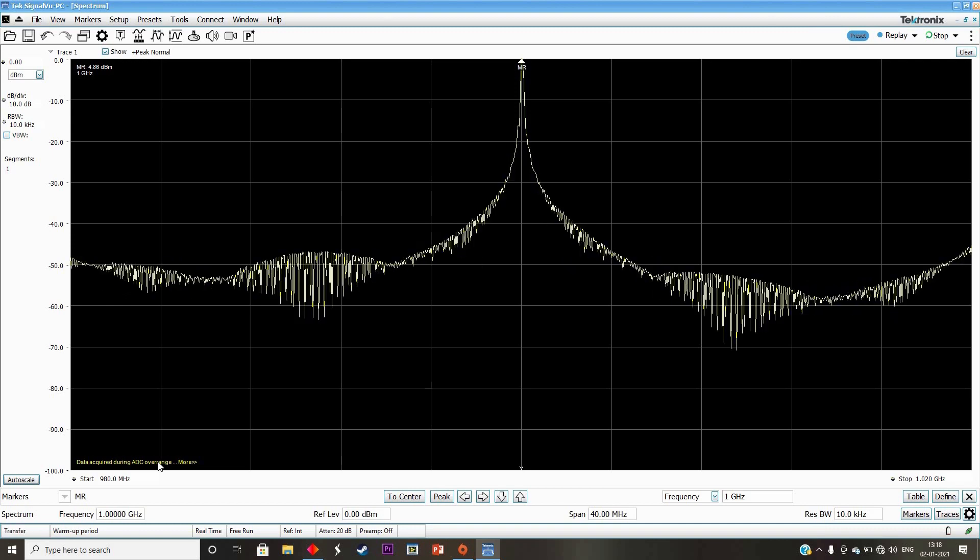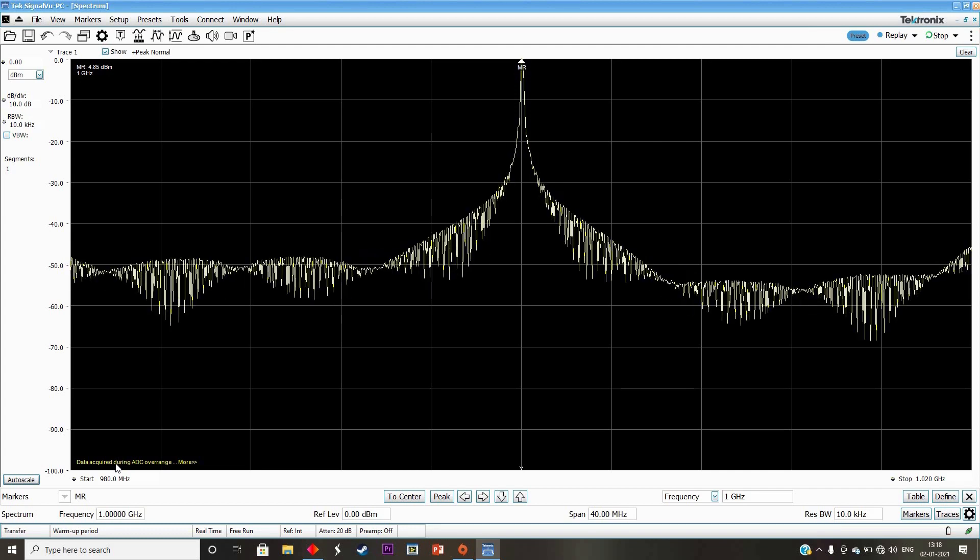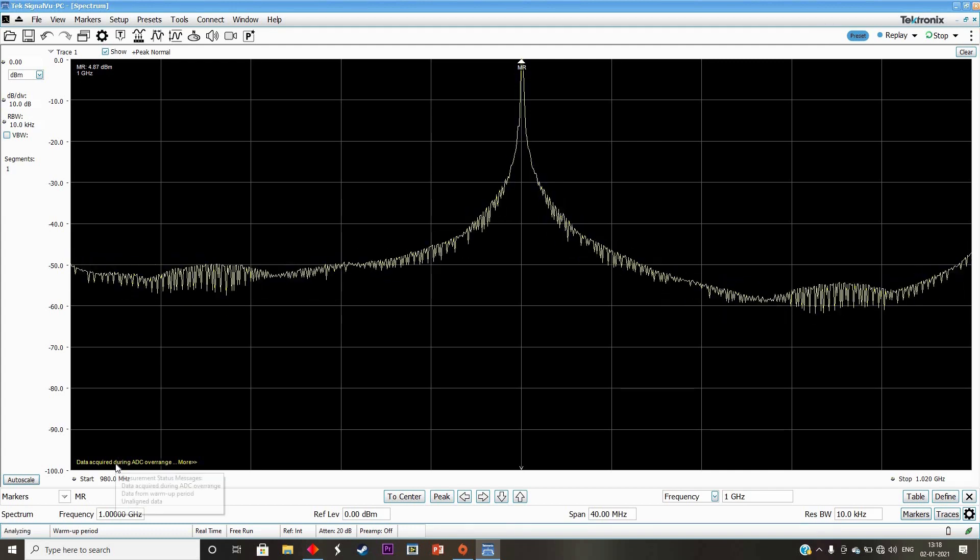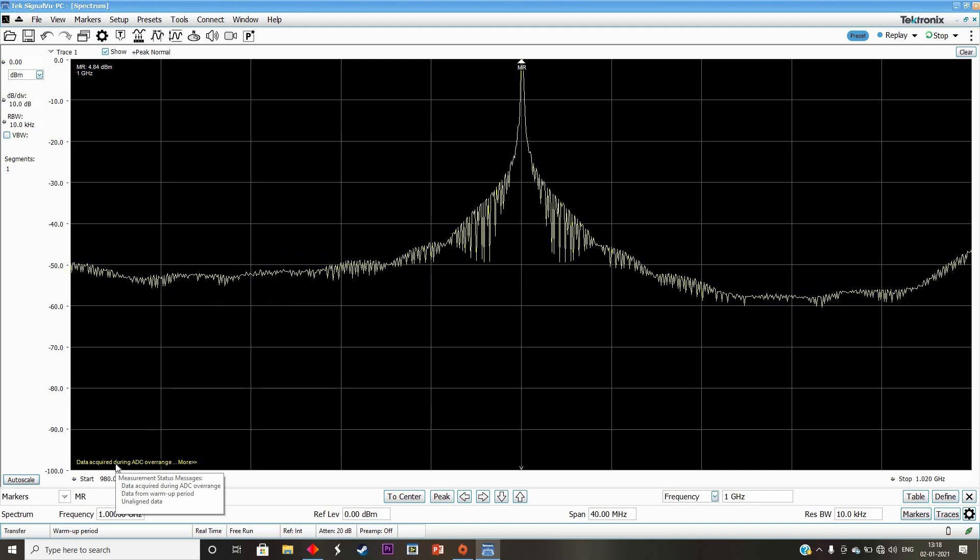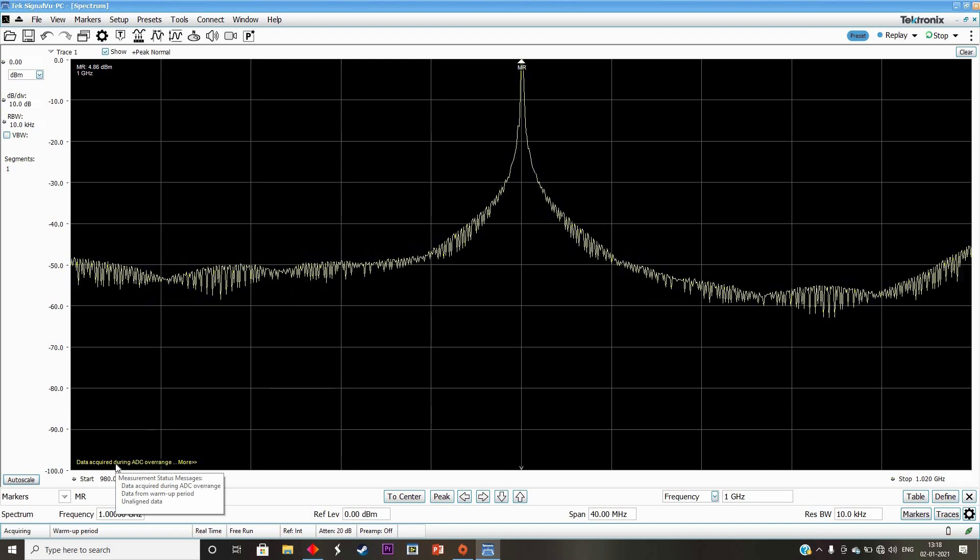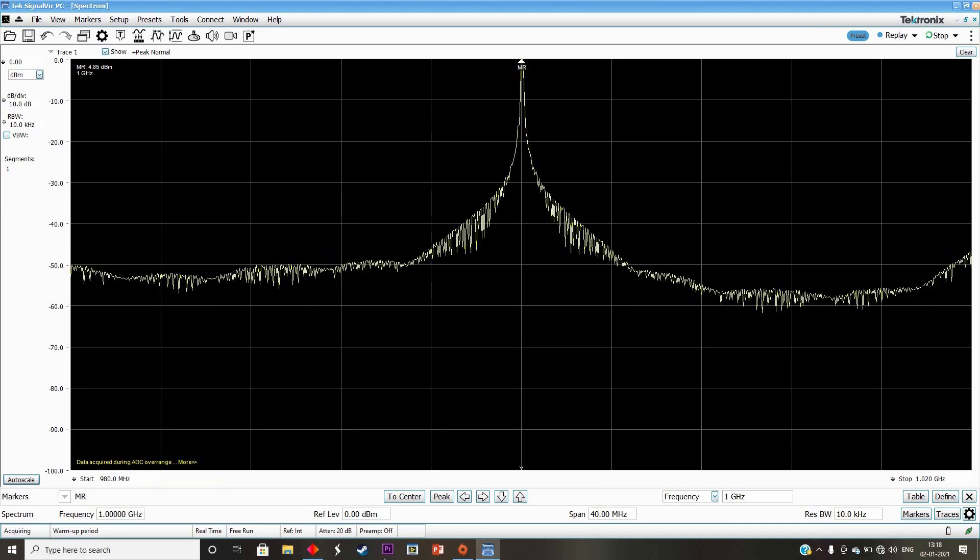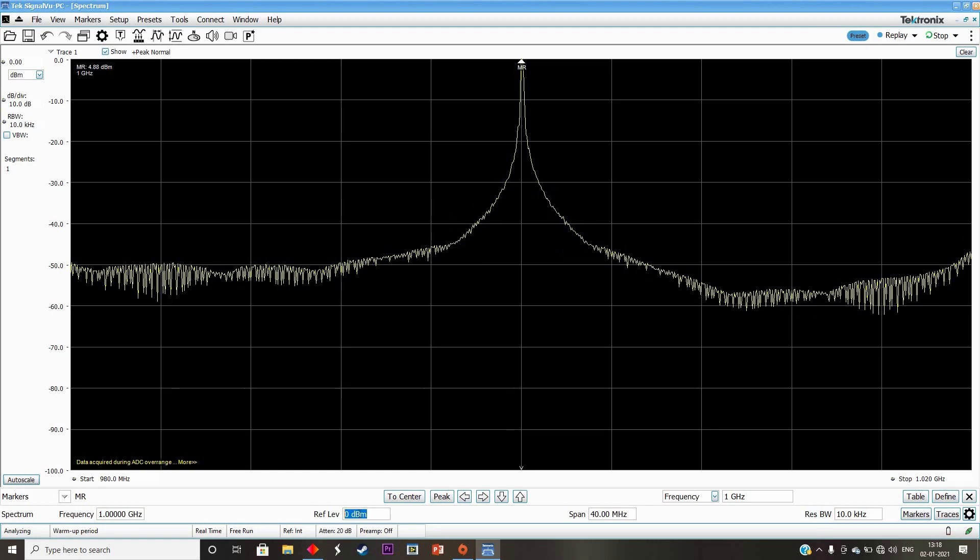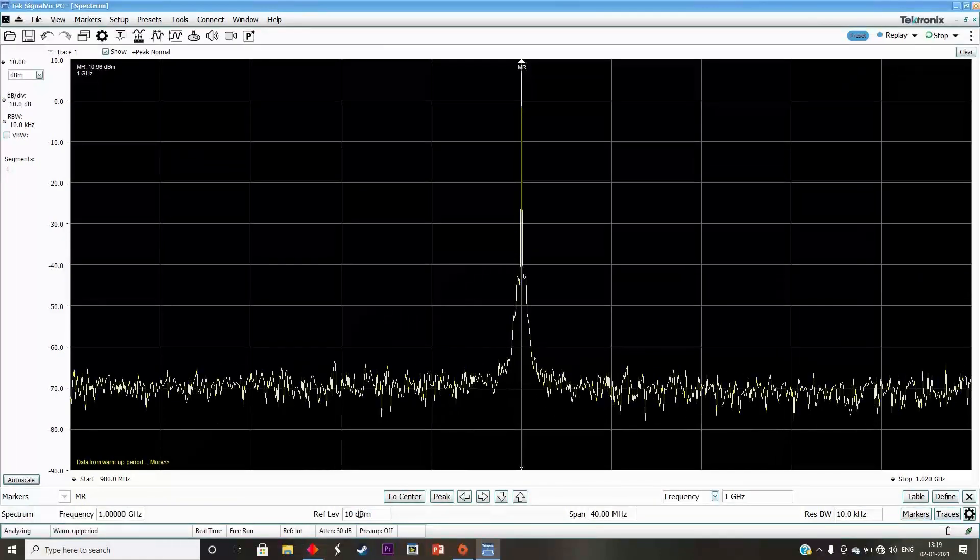This indicates the maximum input signal amplitude expected. When we set a reference level of 0 dBm, that means the spectrum analyzer will expect a signal with a maximum amplitude of 0 dBm. Let us change the reference level from 0 dBm currently to avoid the ADC over range error.